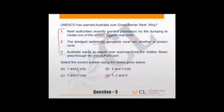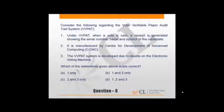UNESCO has warned Australia over Great Barrier Reef. Recently they warned, and all the reasons are given here. The reef authorities granted permission for dumping to create one of the world's biggest coal ports. The dredged sediments can smother or poison coral. Australia wants to export coal reserves from Galilee Basin through Abbott Point. The whole news extract is here - you can read this. All three reasons are correct. Such factual questions - you will have to answer some of them, though it's difficult to answer all. Some you can solve smartly using the options.